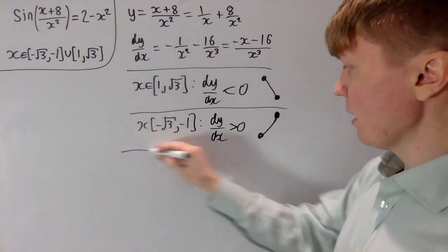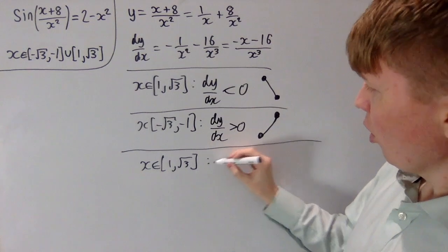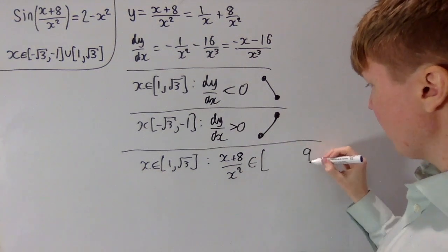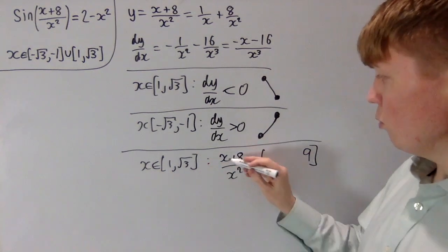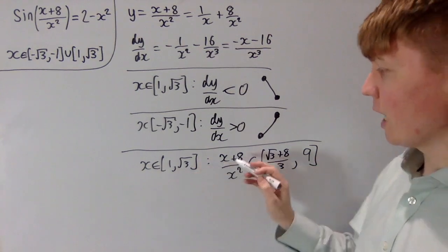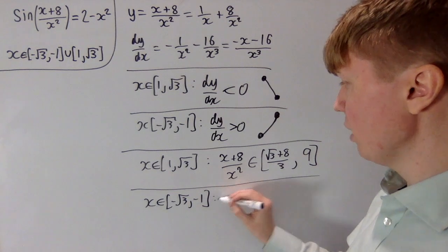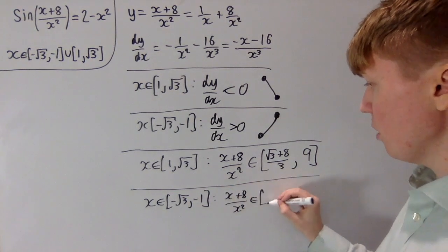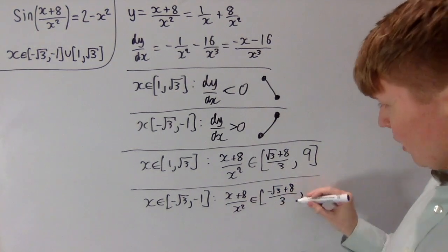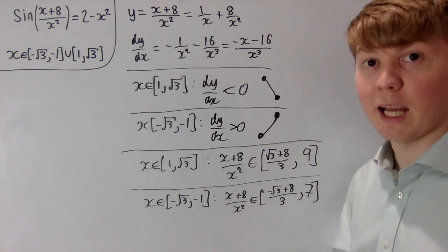In the first region between 1 and root 3, (x+8)/x² decreases from 9 (at x=1: 1+8/1) down to (root 3 + 8)/3 (at x=root 3). In the second region between minus root 3 and minus 1, (x+8)/x² increases from (minus root 3 + 8)/3 at x=minus root 3, which also gives roughly 3, up to 7 at x=minus 1: minus 1 + 8/1.